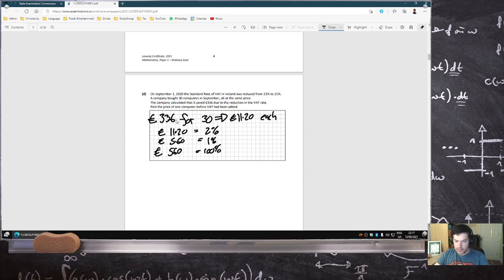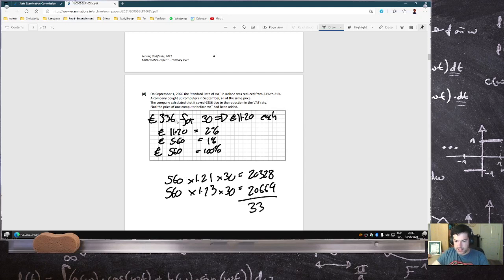Let me just, let's just check here. 560 times 1.21 times 30 is 20328. And then 560 times 1.23 times 30. That's 20664. And that is a saving of 336. Yeah.